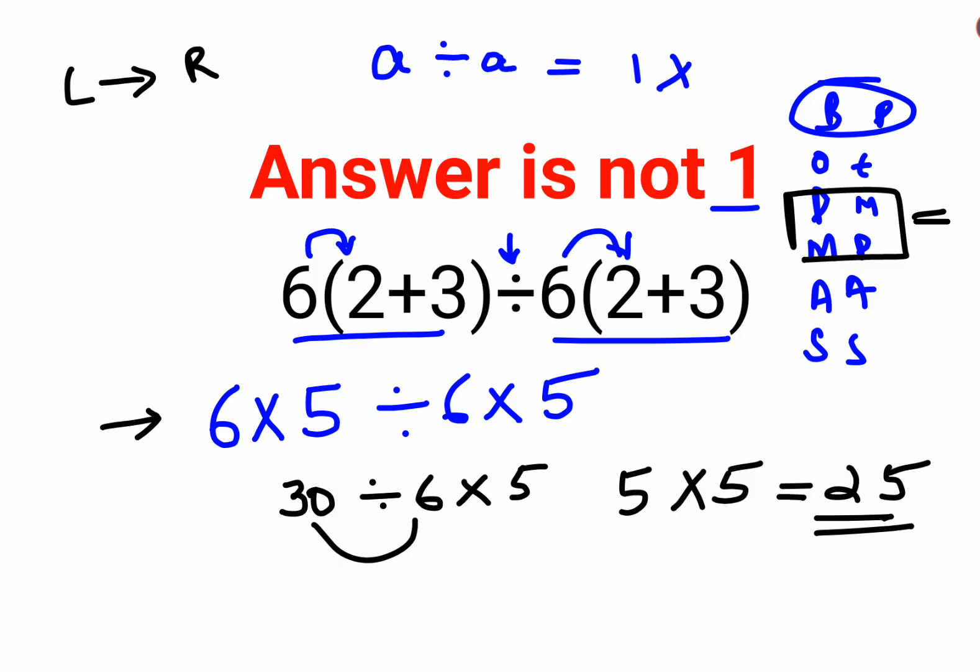Now you might be wondering when the answer could be 1. The answer can be 1 if your question was in this form: the whole 6×(2+3) is under a bracket, then division sign, then another bracket with 6×(2+3).